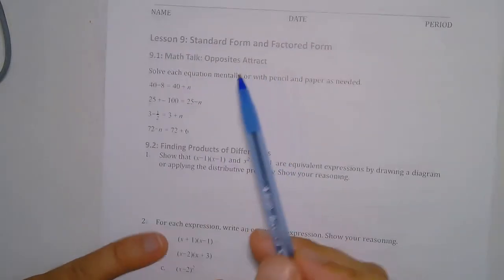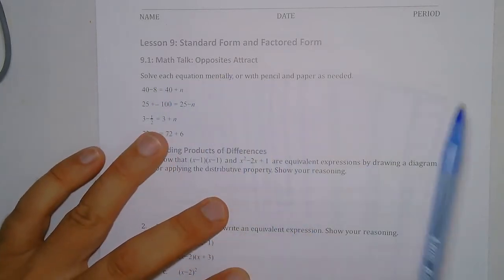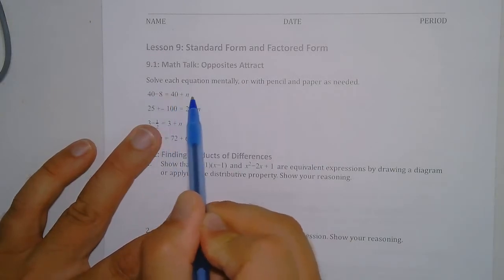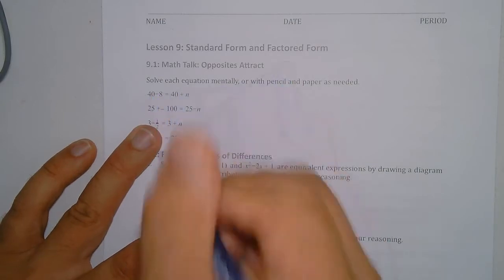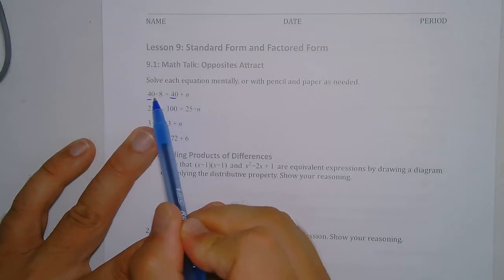So what we're going to do is start off with a math talk. We're going to solve each equation mentally or with paper and pencil as needed. Looking at this first equation, we have 40 - 8 = 40 + n. Well, I notice that these first numbers are both 40, so n would have to equal -8.